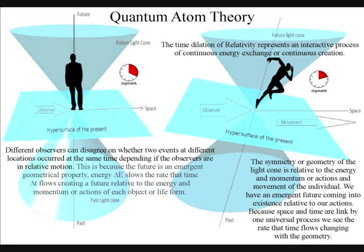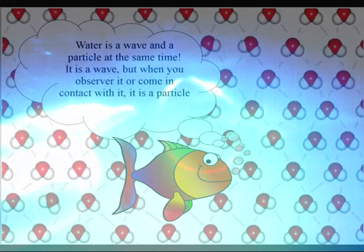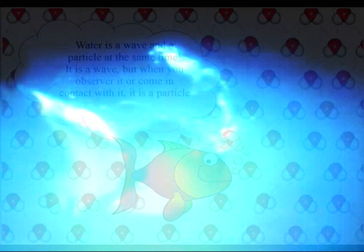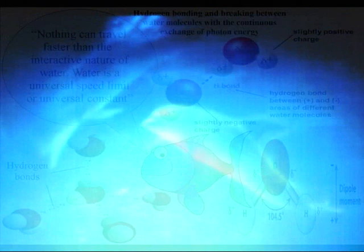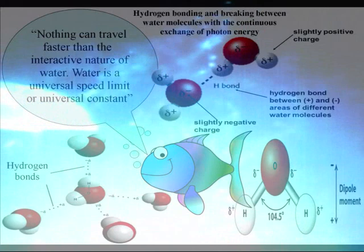It is similar to a fish trying to understand the nature of water. When the fish moves, the water would move relative to the fish. They could easily come up with the idea that water is a wave and a particle at the same time. Also for them, nothing would be able to travel faster than the interactive nature of water. They could think of the speed of water as a universal speed limit or universal constant.